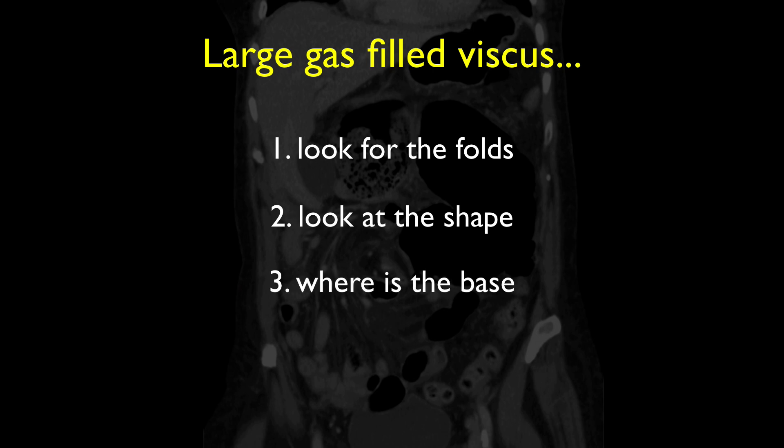Where is the base of the viscus? Is it coming from the pelvis or the right side of the abdomen? If from the pelvis this suggests a sigmoid volvulus, and if right lateral or right iliac fossa this suggests a cecal volvulus.